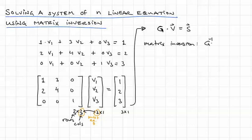Matrix inversion. And we denote it as G inverse, G to the minus 1, is equal to the inverse of G. And we know it's the inverse if G inverse times G yields the identity matrix. The identity matrix is 1's in the major diagonal and 0's everywhere else.